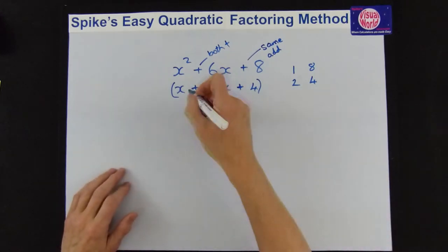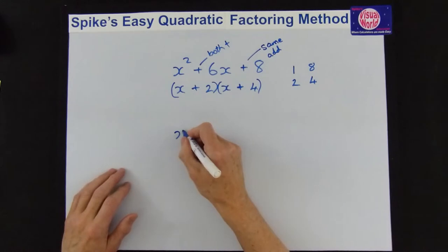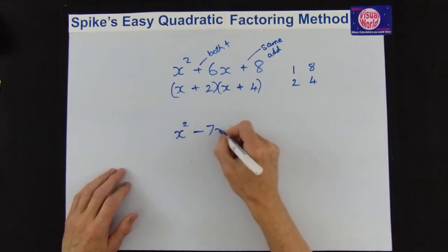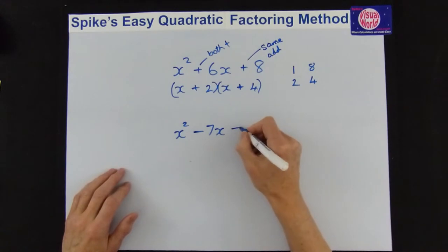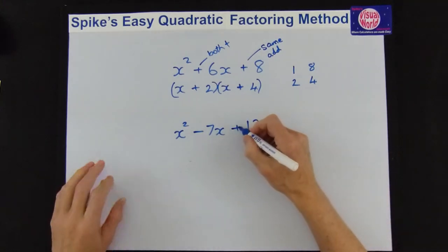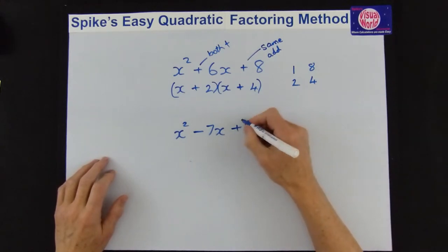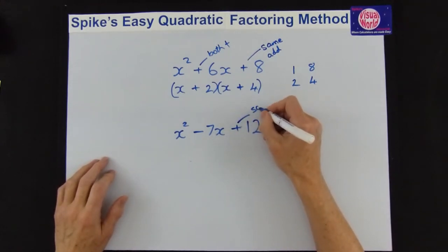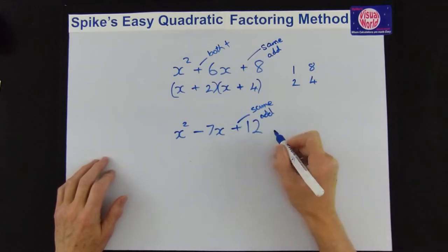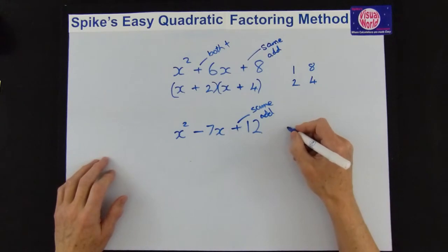The next one we'll have a look at is x squared minus 7x plus 12. Again we have a look at the plus and that tells you that they're going to be the same and that we're going to be adding the numbers.